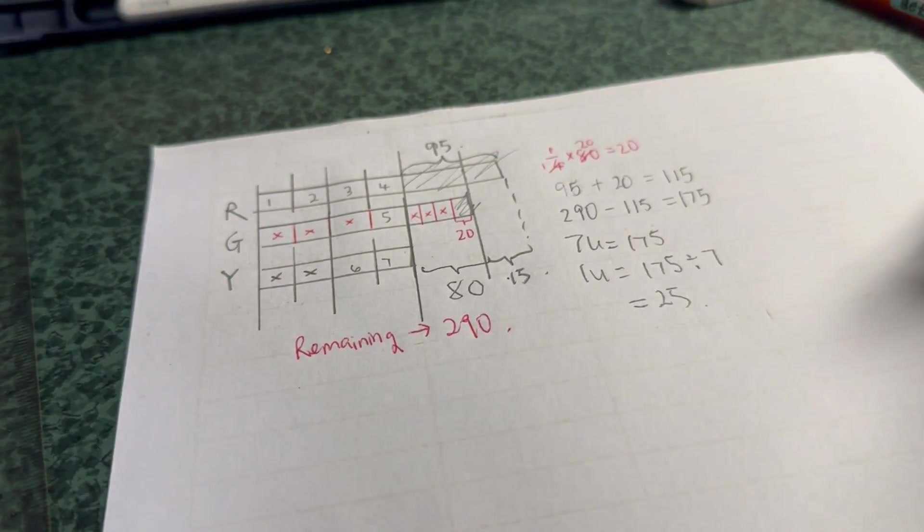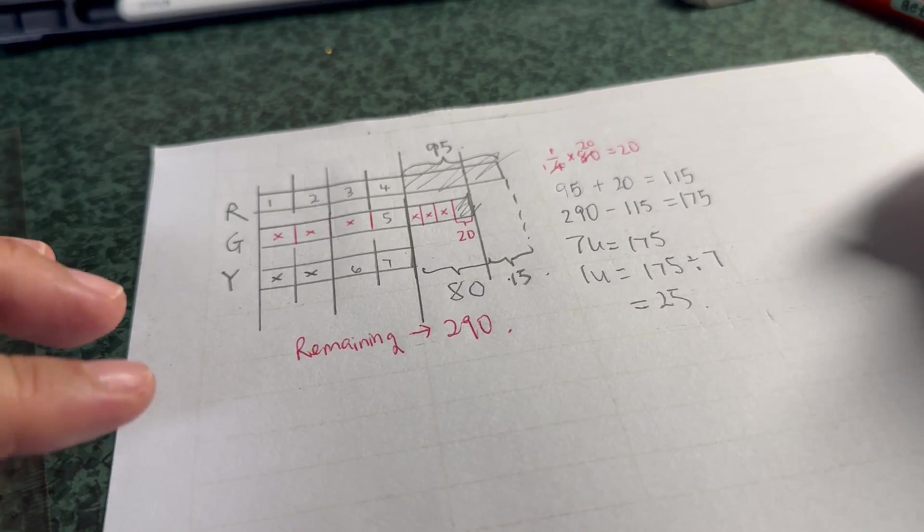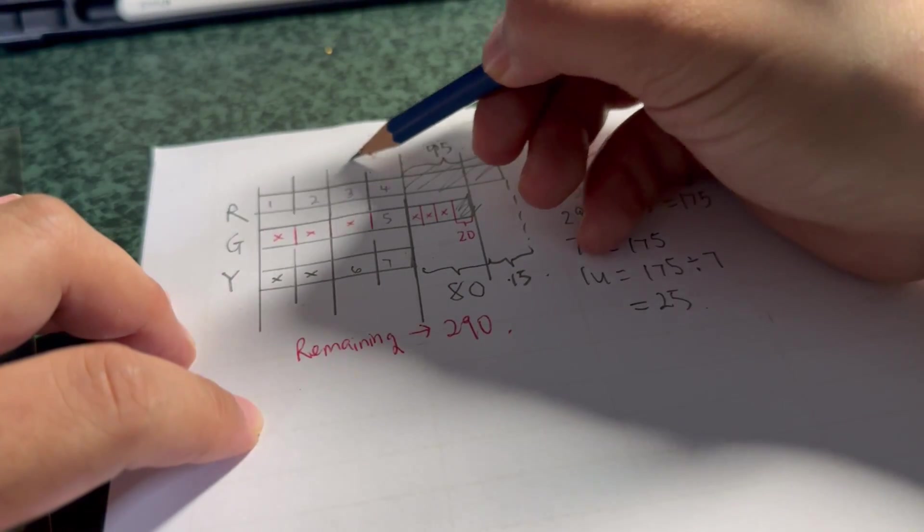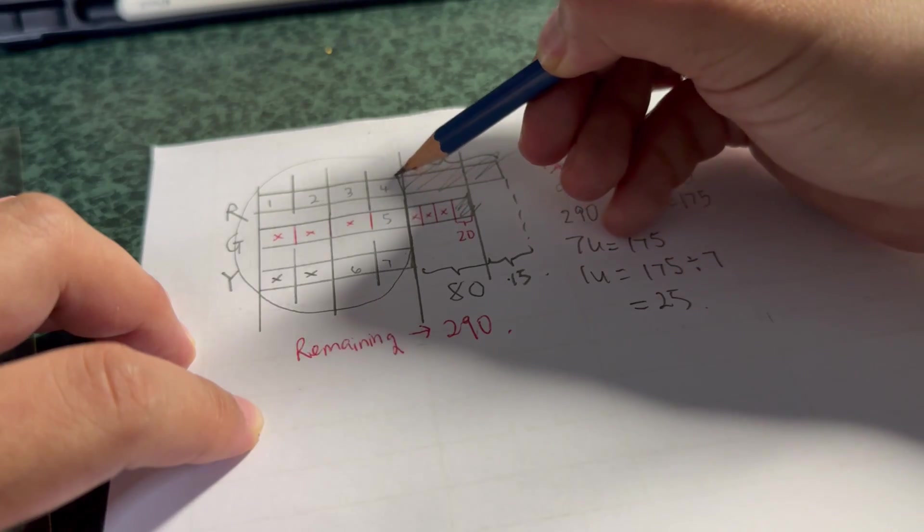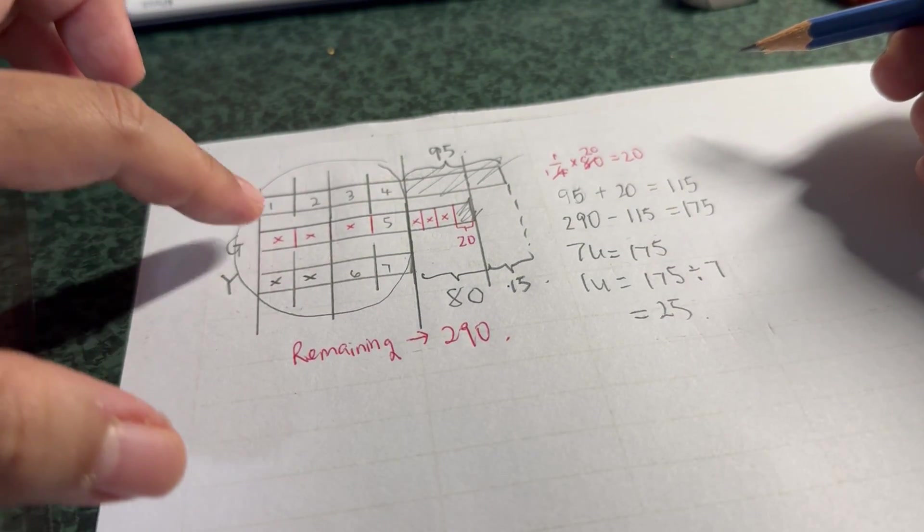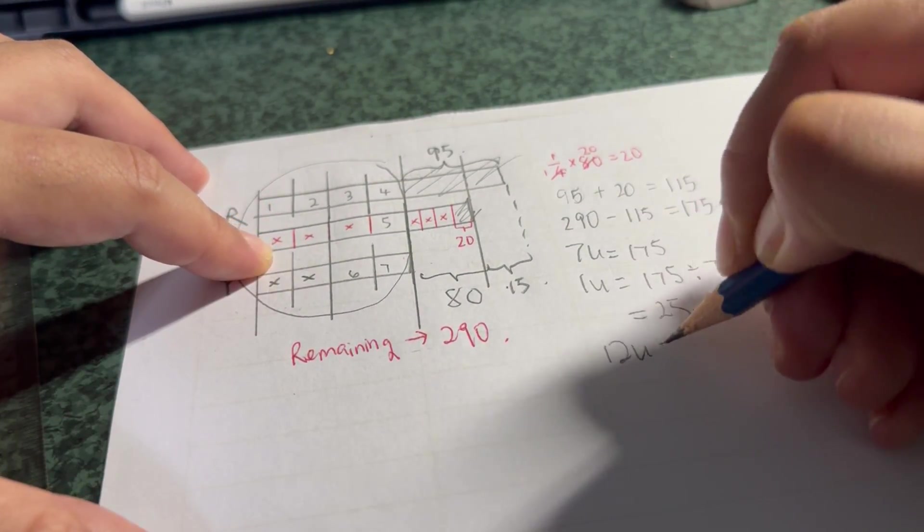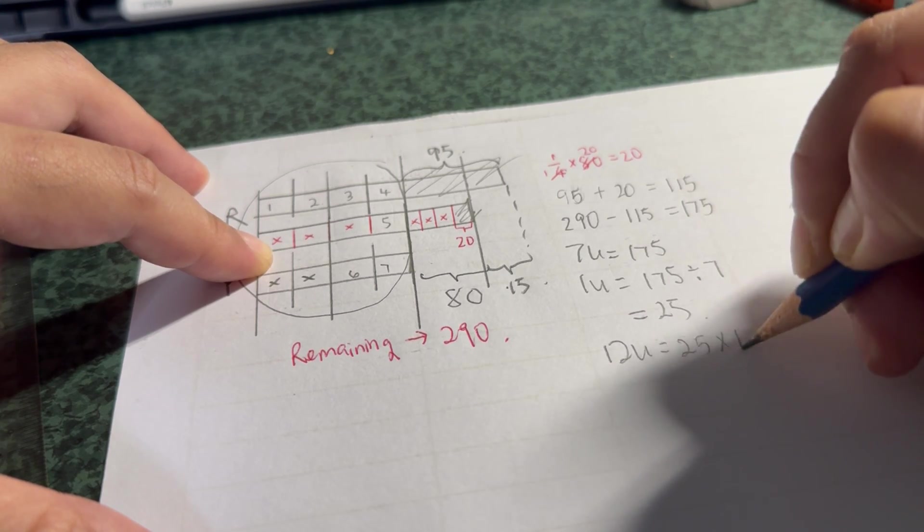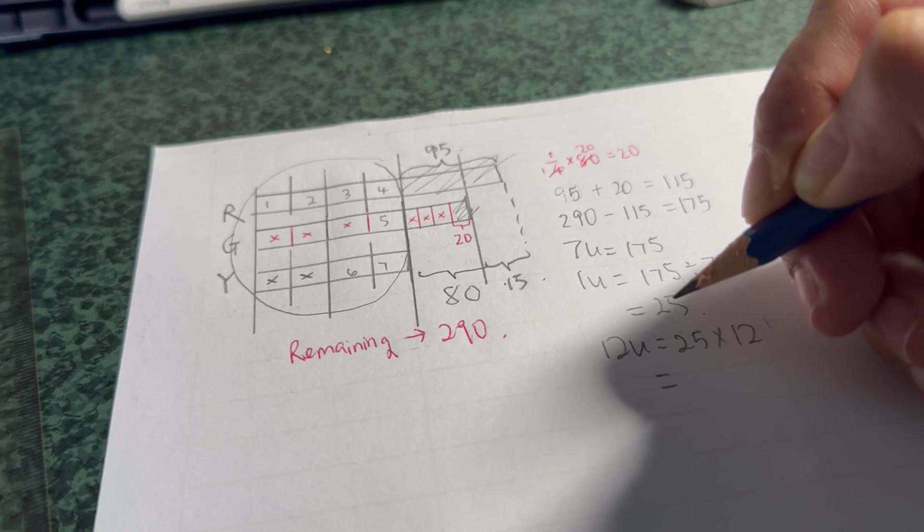Okay, so how many buttons did Mrs. Look have at first? So I'm going to just take it as everything here, which is 4, 8, 12—12 units. 25 times 12 is equals to 300.